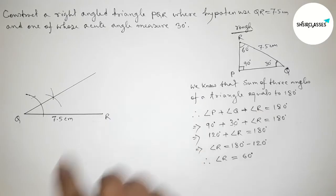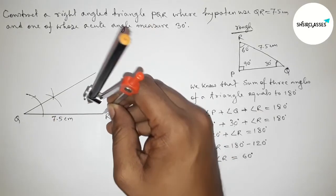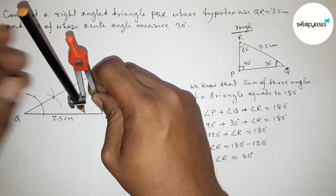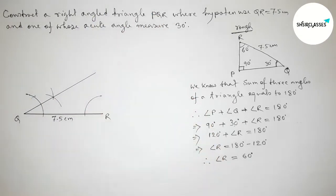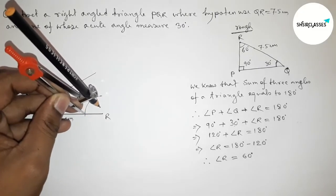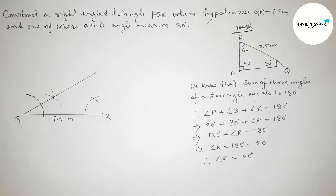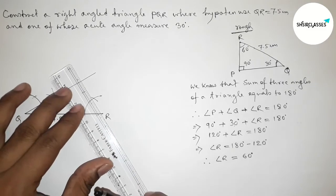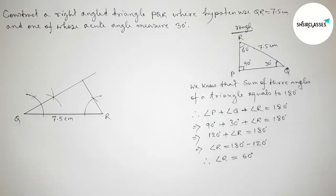Similarly, drawing a 60 degree angle at point R using a compass. Placing the compass on point R and taking any length, drawing an arc. Taking the same length and cutting another arc. Joining this line to get a 60 degree angle at R. Both lines meet at a point, which is point P.